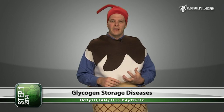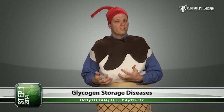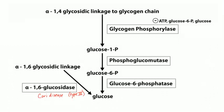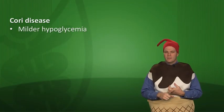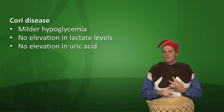You can treat Von Gierke disease by having the patient feed frequently with a steady stream of dietary glucose, and at night give cornstarch to prevent overnight hypoglycemia because cornstarch is digested more slowly. Cori disease, glycogen storage disease type 3, is like a milder form of Von Gierke — caused by a defect in debranching enzyme. Patients can break down alpha-1,4 linkages but not alpha-1,6 linkages. Gluconeogenesis works fine, so they have milder hypoglycemia, no elevation in lactate, and no elevation in uric acid.